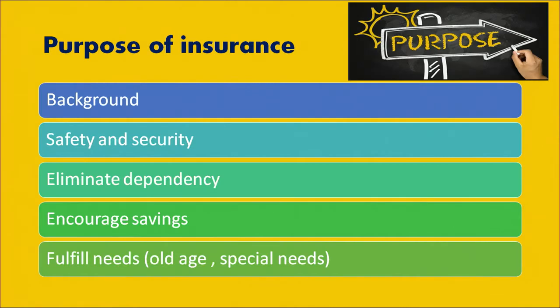Having talked about the nature of insurance, let us now discuss the purpose of insurance and what is the need of insurance. In earlier times, whenever a calamity or mishap struck any family, there was the joint family system. There would be friends, family, and neighbors to support during those times of distress. They would come and pool their resources and help in times of need.